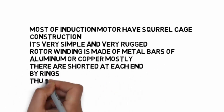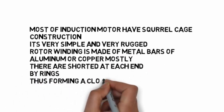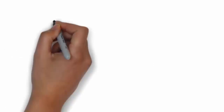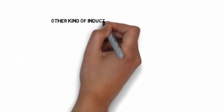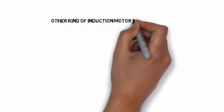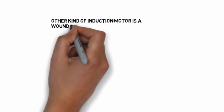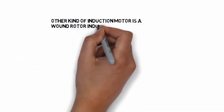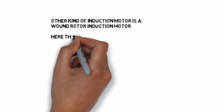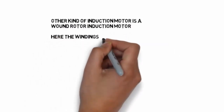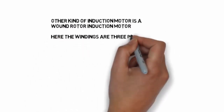These bars are shorted at each end by rings, thus forming a closed loop. So there are rotor bars which are shorted at both ends to form a closed circuit. The other kind of motor is a wound rotor induction motor.